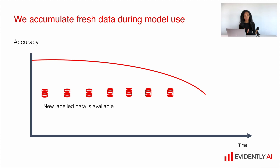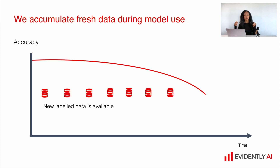The good thing is that during model usage we accumulate new data which we can use to retrain or update our model. Sometimes we have labeled data straight away, sometimes we need to send it for human labeling, but in any case we accumulate new batches of data which we can reuse later to update our models.